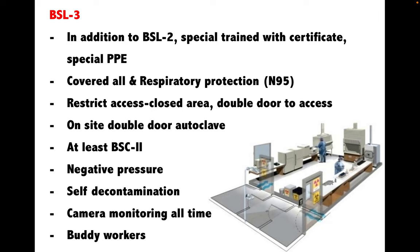BSL 3, in addition to BSL 2, requires that people working in BSL 3 be fully licensed with specialized PPE such as a Tyvek lab coat and N95 mask. Very strict access is required through double doors, and a double-door autoclave must be available on site. BSL 3 must operate under negative pressure air ventilation with self-decontamination. A monitoring camera must be on at all times, and you must always work with a partner — you cannot work alone. There should be a BSL 3 venue at CMU soon; there are very few in Thailand.